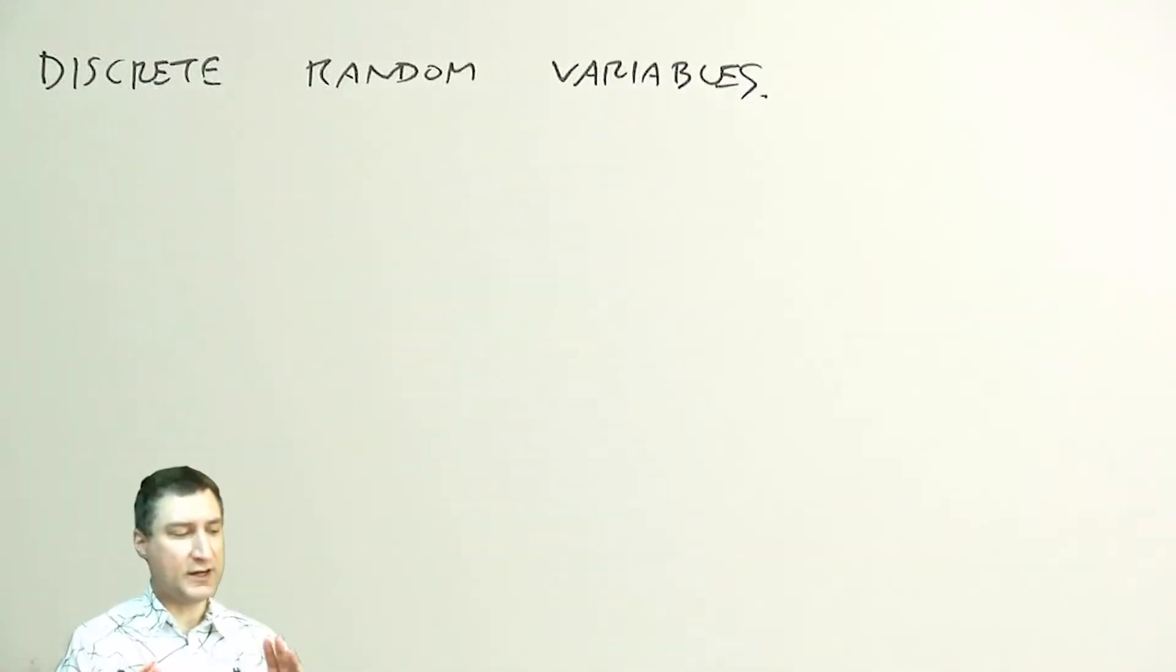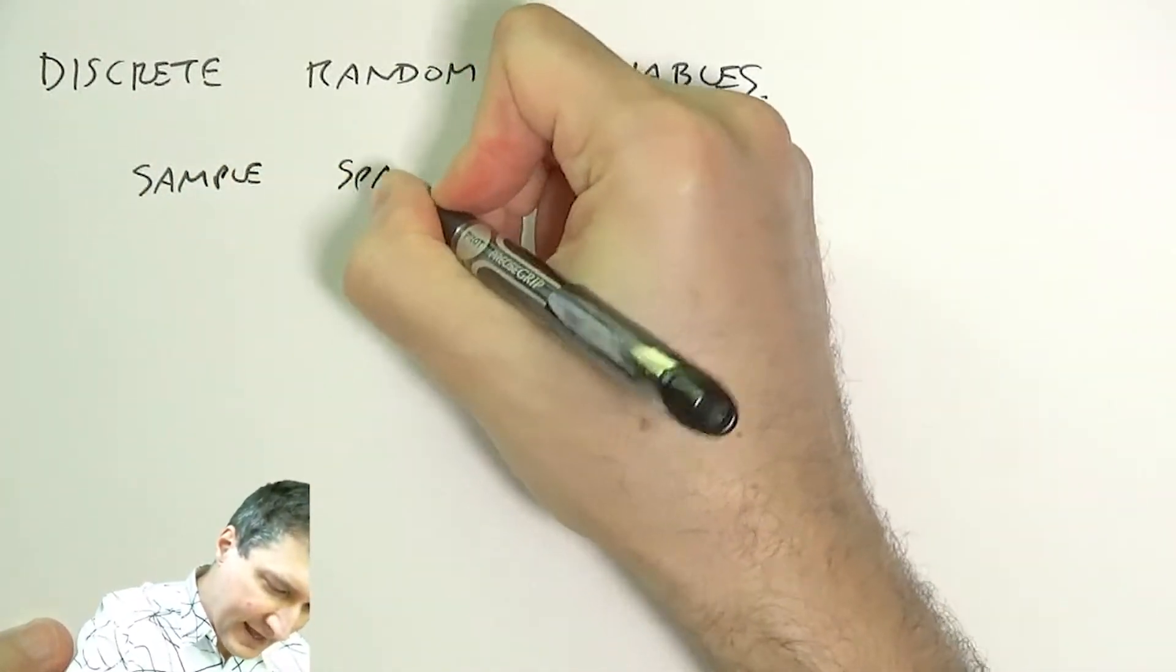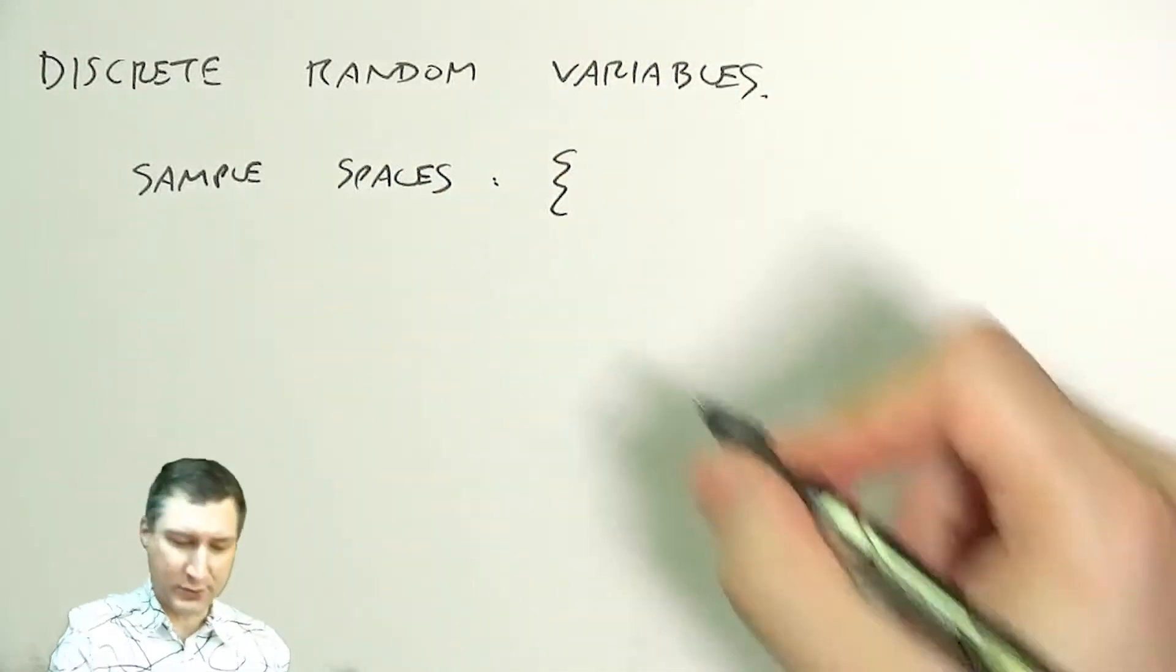So far, everything we've talked about are kind of generic sample spaces. Our sample spaces in various problems have looked like, you know, I flip two coins and I record the outcome, so I could have head head, head tail, tail head, tail tail.